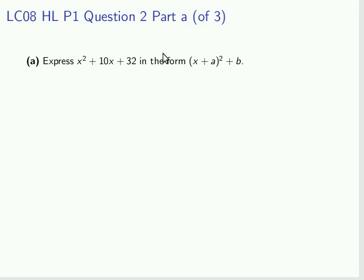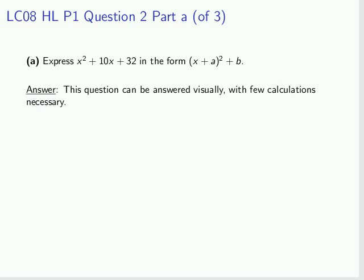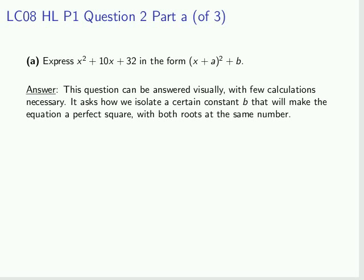The first part is a quadratic that we have to describe in the form (x + a)² + b. This can be actually answered basically. A few calculations are necessary. We ask how we isolate a certain constant b that would make the equation a perfect square.